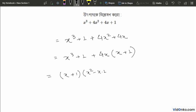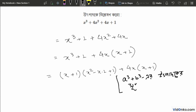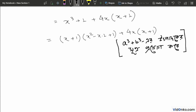So we have x plus one, then x square minus x plus one, plus 4x into x plus one. Now x plus one, x square plus two x plus one.